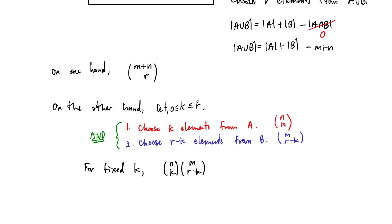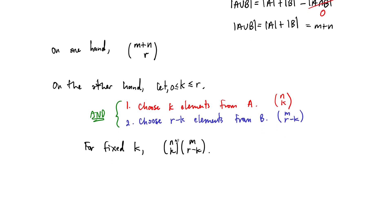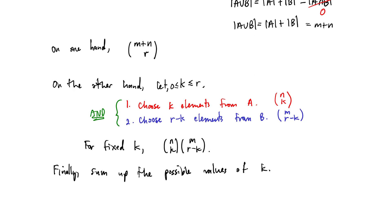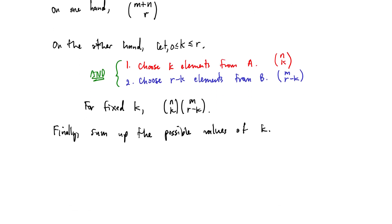But of course, there are lots of different ways that we can break up this r, the r units into k units plus r minus k units. And so finally, what we need to do is add up all these different possibilities for the different number of k's. So finally, sum up the possible values of k. What we end up with then is that the way that we can choose these r elements from these two sets is going to be the sum, k goes from 0 up to r, that's exactly what we have here, add up these products. So n choose k times m choose r minus k.